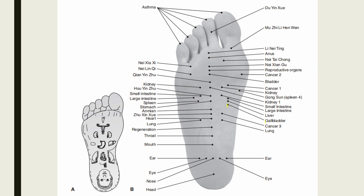The gallbladder point is located 0.3 unit proximal to the liver point, or 5.8 units from the heel, and 1.2 units from the midline. Indications include cholecystitis and hypochondriac area pain. The small intestine point is located 0.3 unit distal to the stomach point and 1 unit medial and lateral to the midline, at 6.4 units from the heel. Indications include abdominal regurgitation, borborygmus, and abdominal pain.